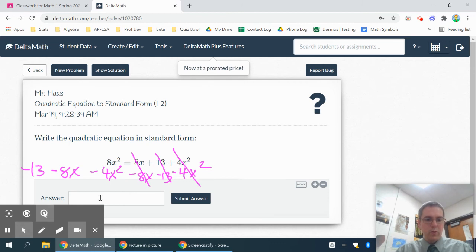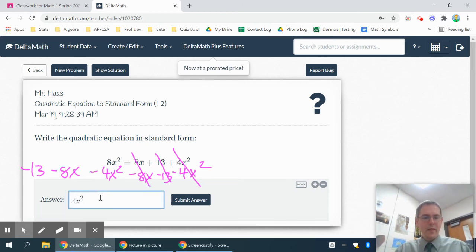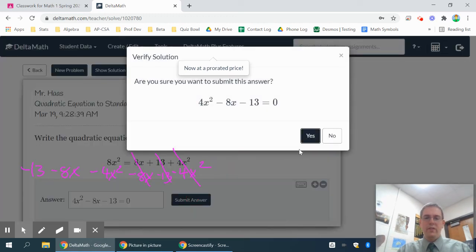And then standard form means to put it in order, so 8 minus 4 is 4x squared. Then my x's, so it's minus 8x, and my numbers are minus 13, equals 0. And that's a very nice standard form equation.